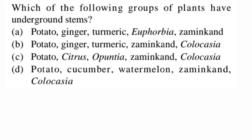Next question: which group of plants have underground stems? There are four types of underground stems: tuber, rhizome, corm, and bulb. Potato is a tuber — modified stem for storage. Ginger is a rhizome — also modified for storage. Turmeric is a rhizome. Zamikand is a corm, and Colocasia is also a corm. Onion (Allium cepa) is a bulb. So option B — potato, ginger, turmeric, zamikand, and Colocasia — is correct.